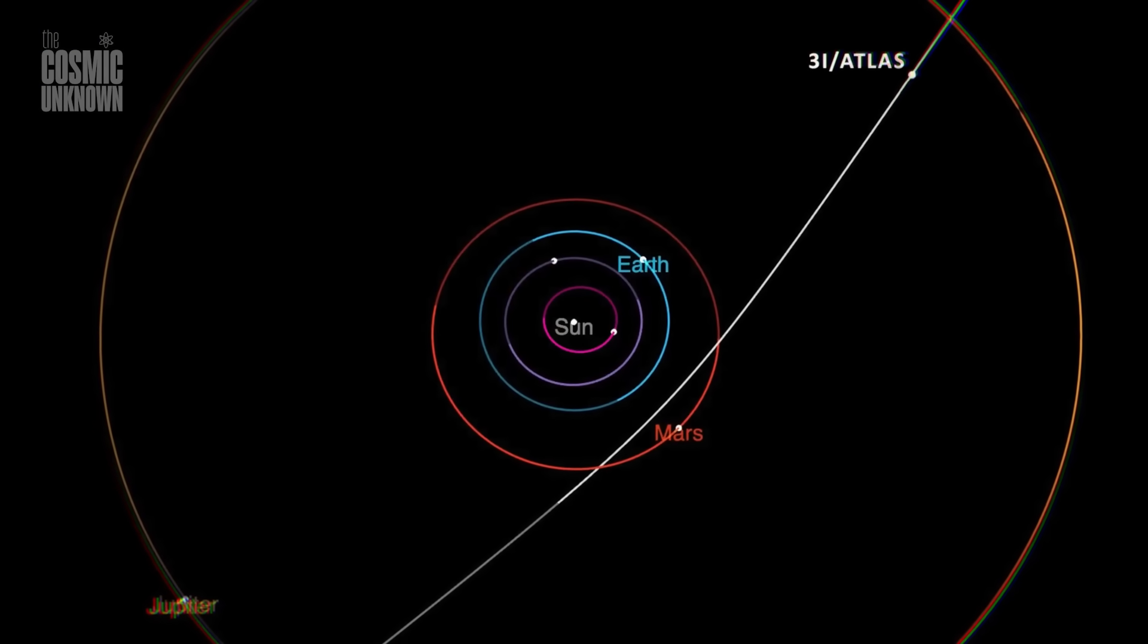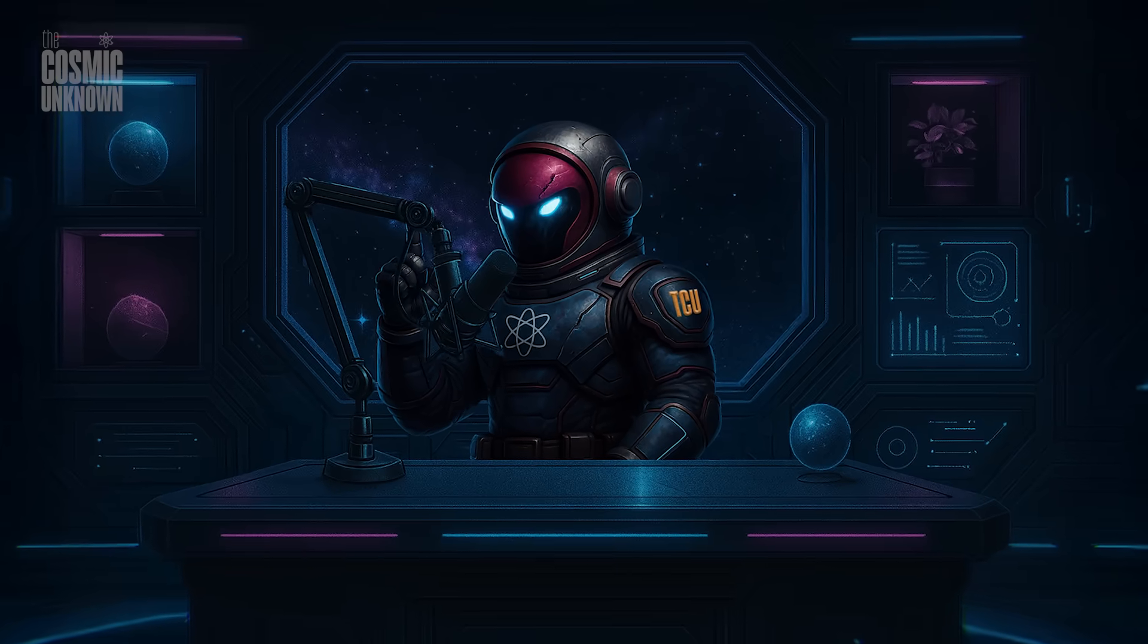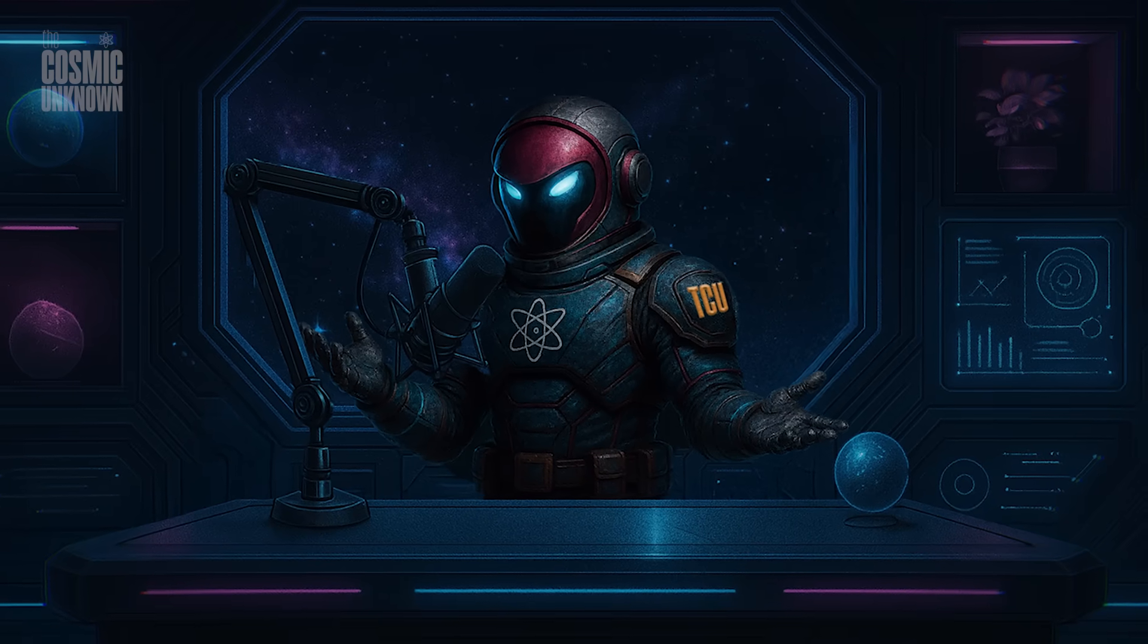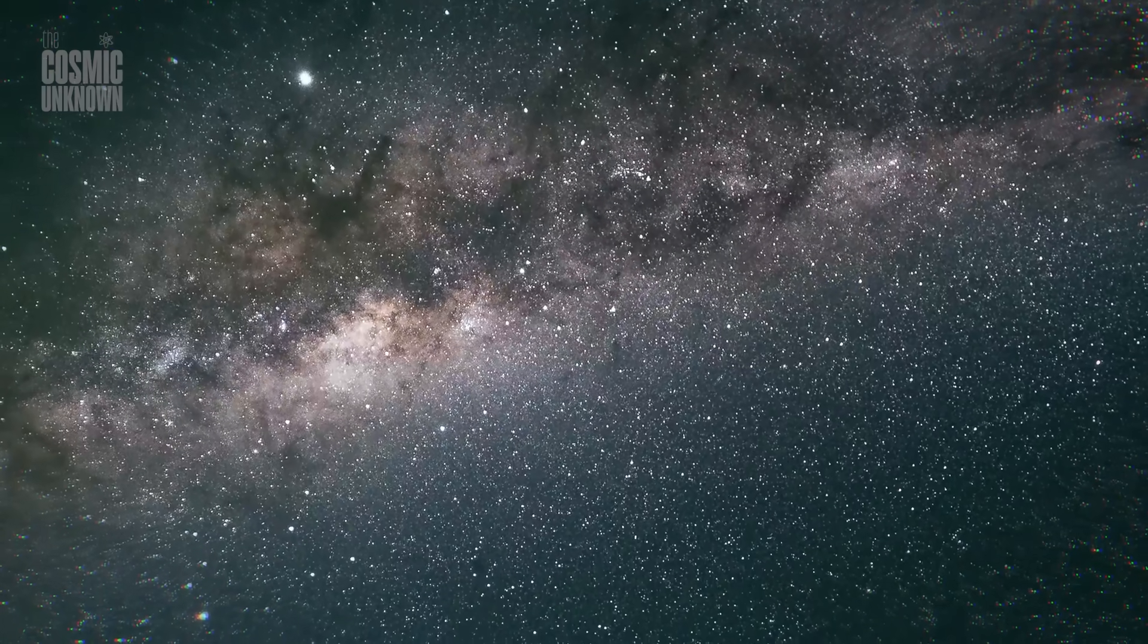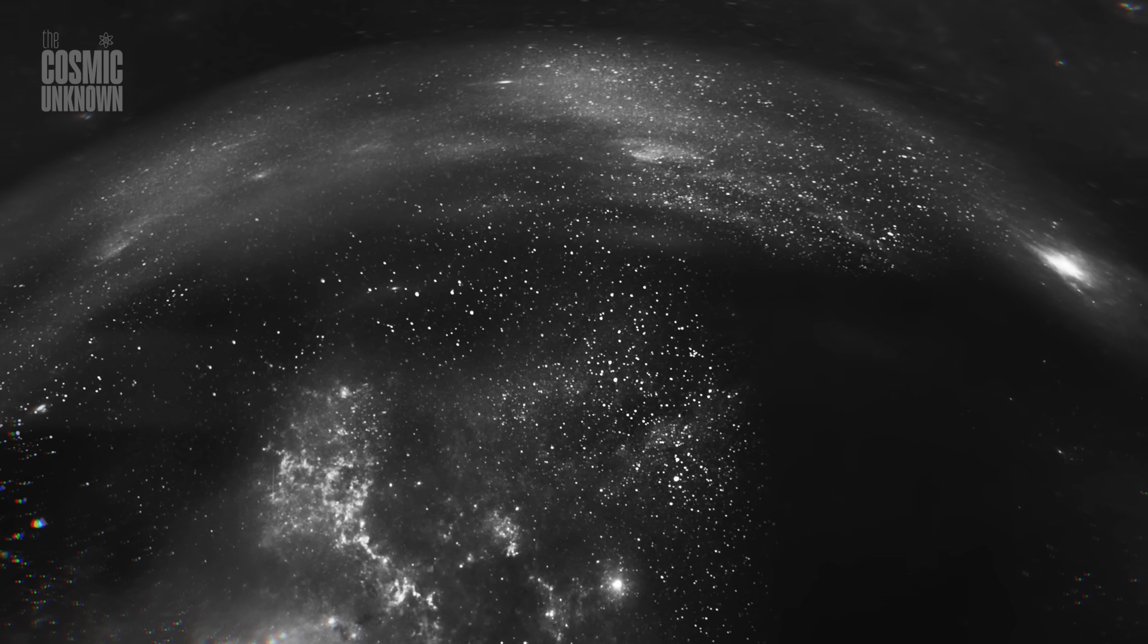The European spacecraft JUICE, en route to Jupiter, and NASA's Psyche mission traveling through the asteroid belt will both be within 0.3 to 0.4 astronomical units of 3I Atlas during this period, close enough to potentially observe it directly if their teams decide to take the shot.